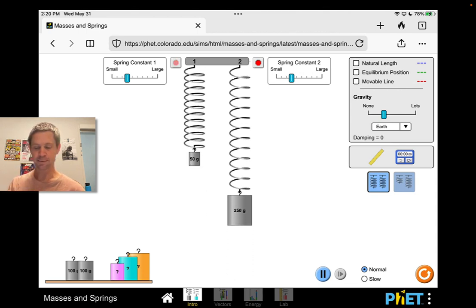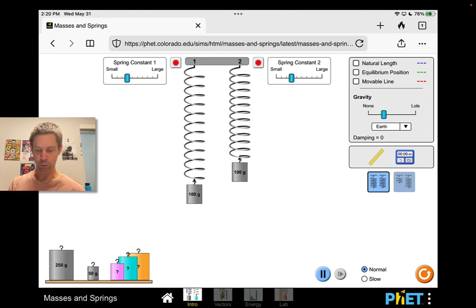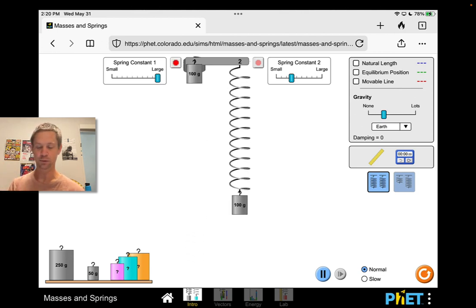Now if we stop these and we equalize the masses, let's put 100 grams on both ends now, and let's look at what happens when we change the spring stiffness. Say I've got a stronger bond in the case on the left, so I've got a very large spring constant. You can actually see the spring thicken up a little bit indicating it's a stiffer spring, and I've got a looser spring in the position on the right. Now if I set these oscillating, watch what happens.